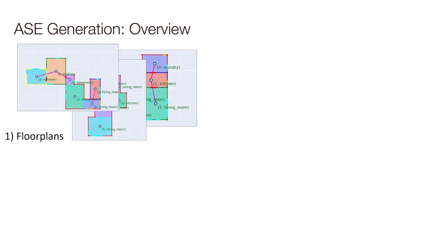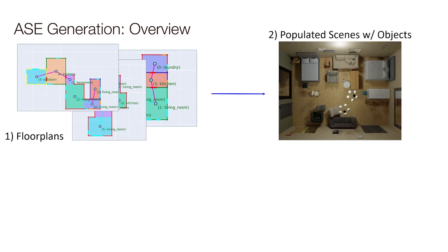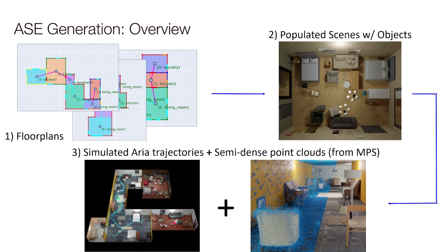Here's a quick overview of how the dataset was generated in three phases. First, we procedurally generate floor plans - here I'm showing the floor plans plotted, with connected rooms. Then we extrude them into 3D and populate them with objects from the Amazon Berkeley dataset. Here's a top-down render of a single room with beds, couches, lamps, and pictures on the wall. Once we have these scenes, we simulate trajectories - the blue line shows the agent walking around - and from that simulated ARIA recording, we pass it through machine perception services to get semi-dense point clouds, visualized here reprojected back into a particular image.